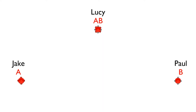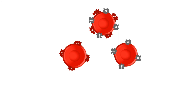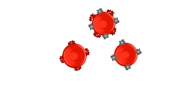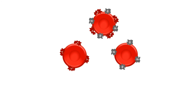Let's imagine Lucy has blood group AB. Can Jake and Paul donate blood to Lucy? Yes, they can — because Lucy has both of the antigens in her blood, so it doesn't matter whether Jake or Paul donates blood to her. In none of the cases will she develop antibodies. She can also receive blood from O and from another person with AB blood group. This is why blood group AB is called the universal recipient.